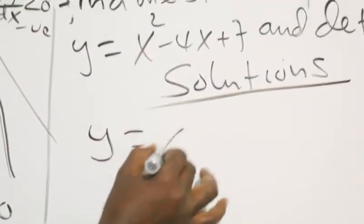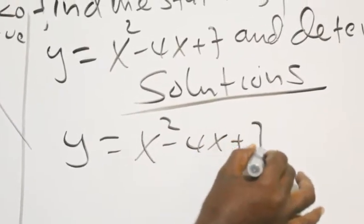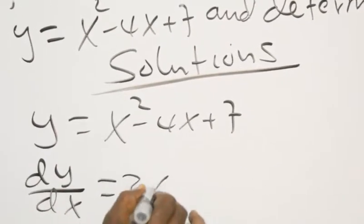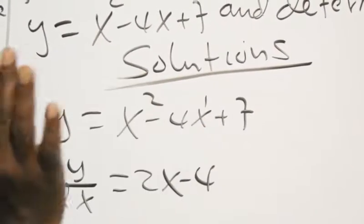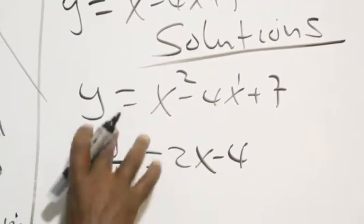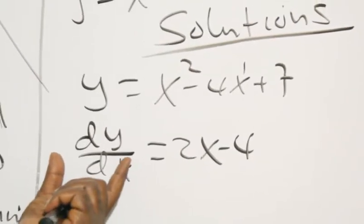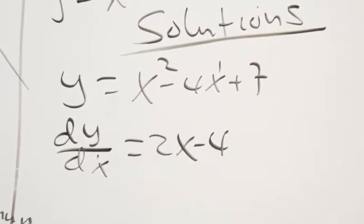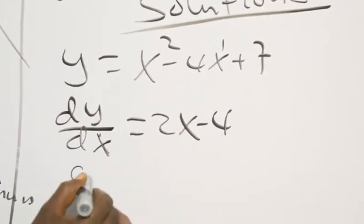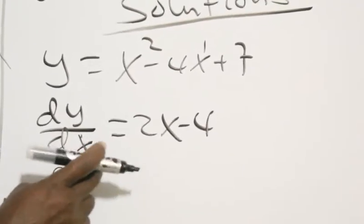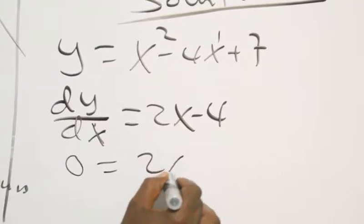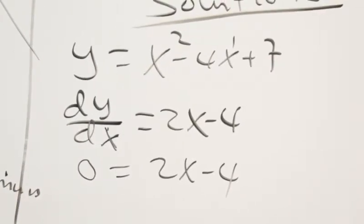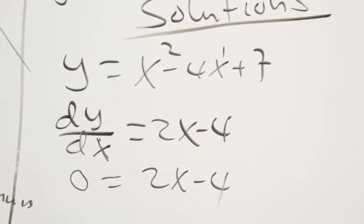The example is: y equals x squared minus 4x plus 7. We are going to find the derivative. dy/dx equals 2x minus 4. Setting the derivative equal to zero: 2x minus 4 equals zero, so x equals 2.